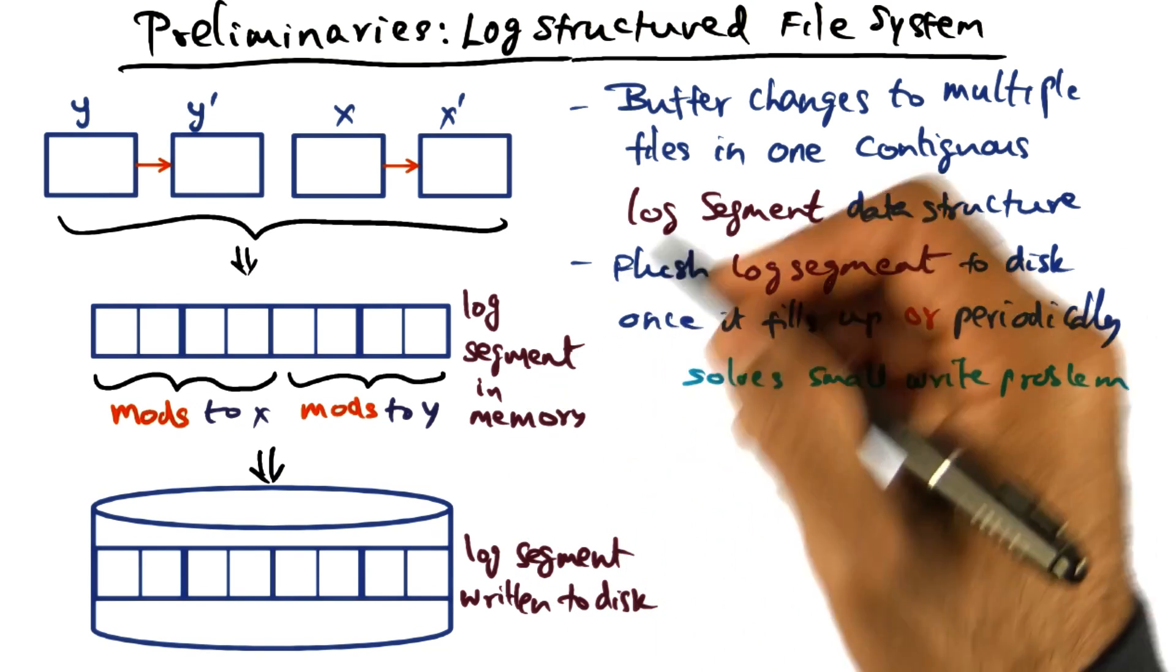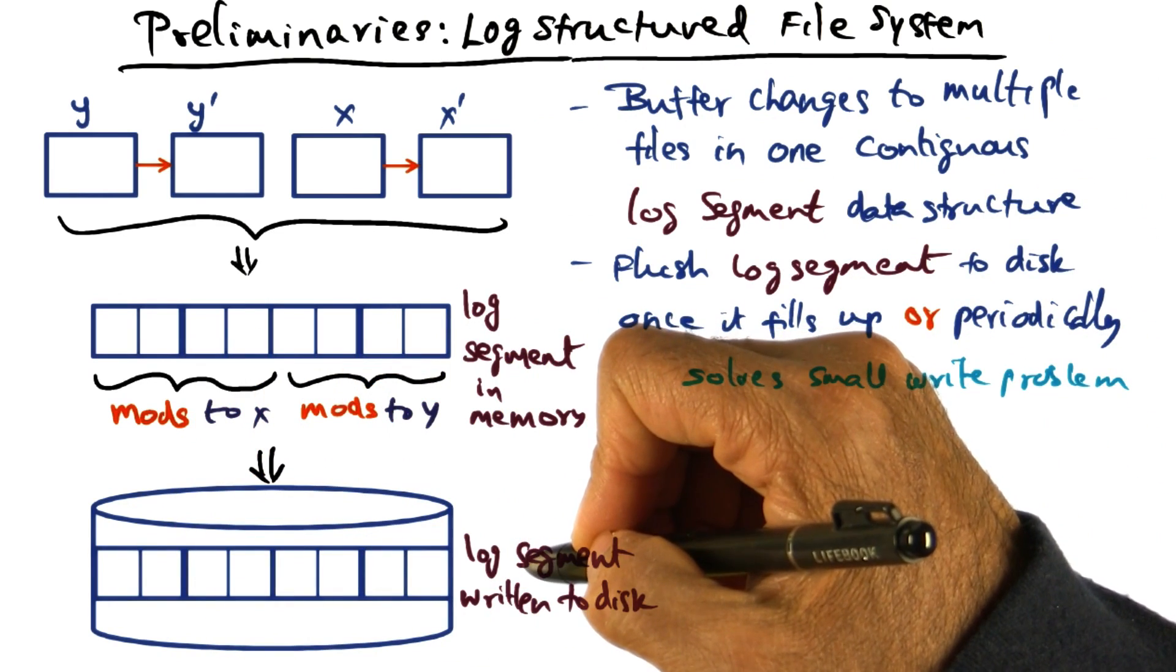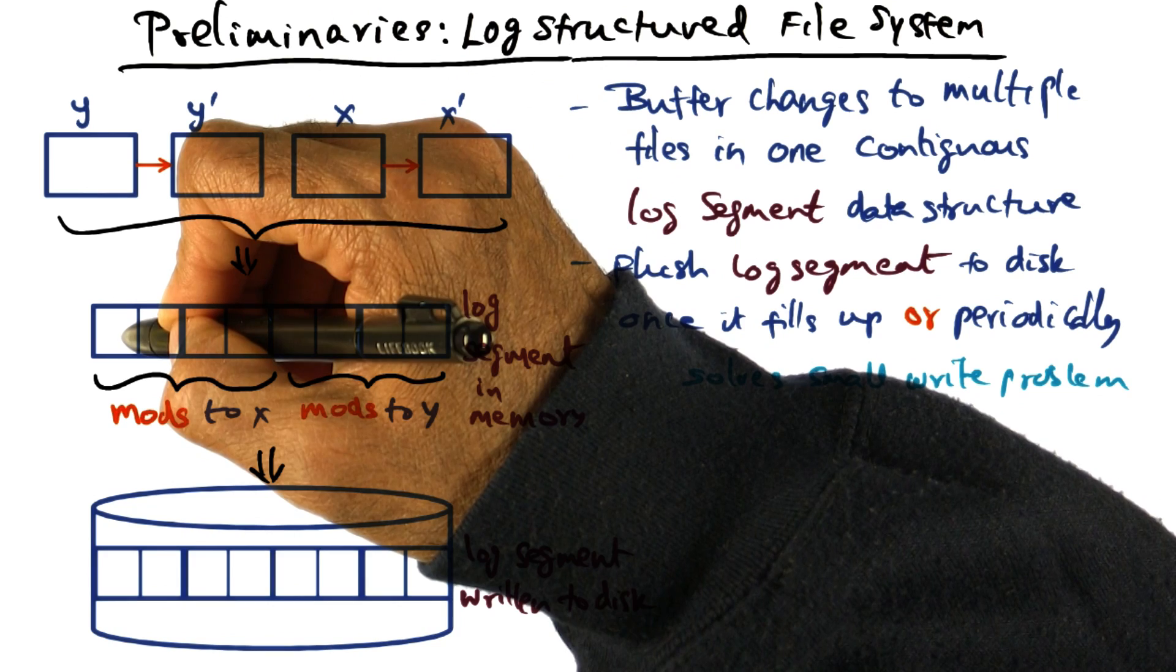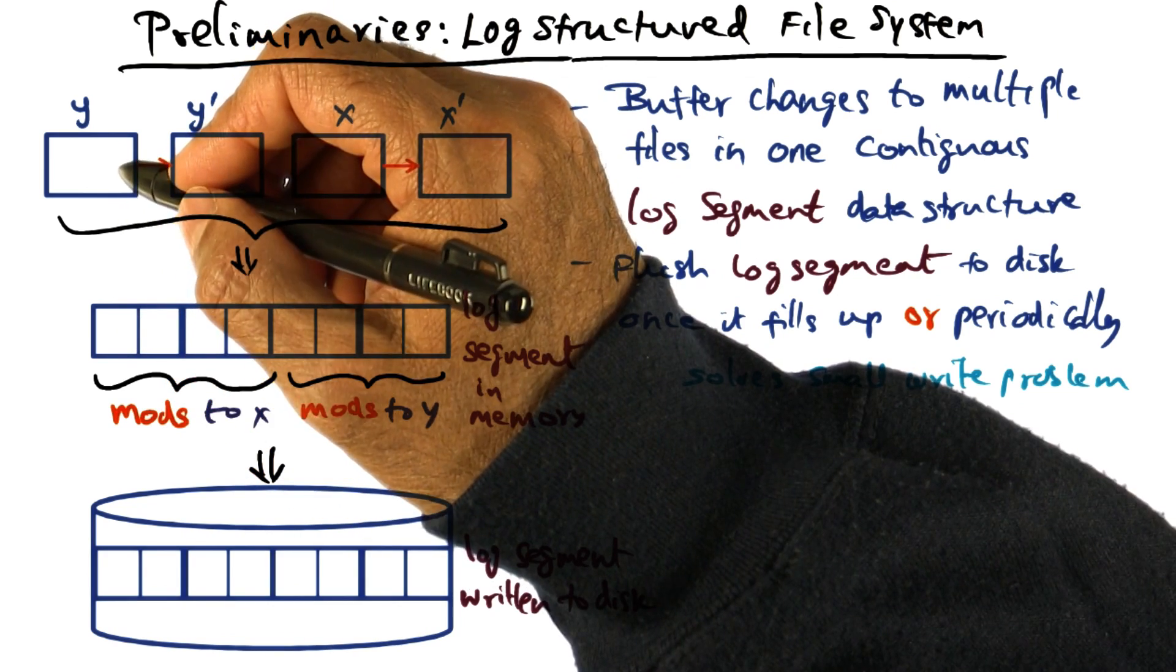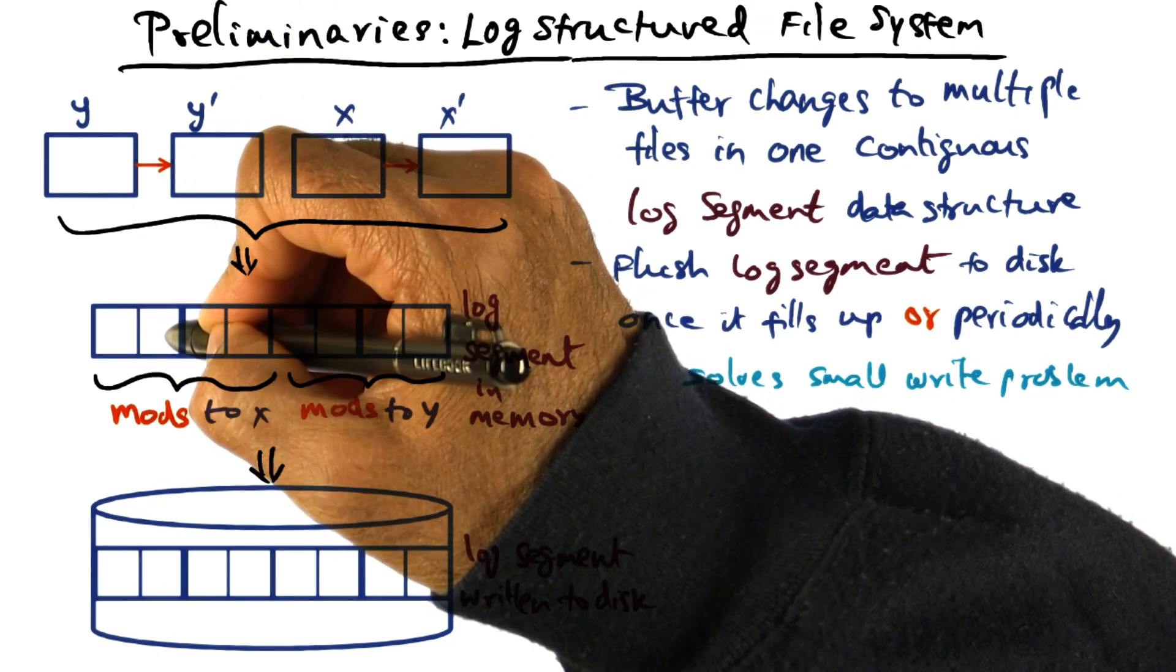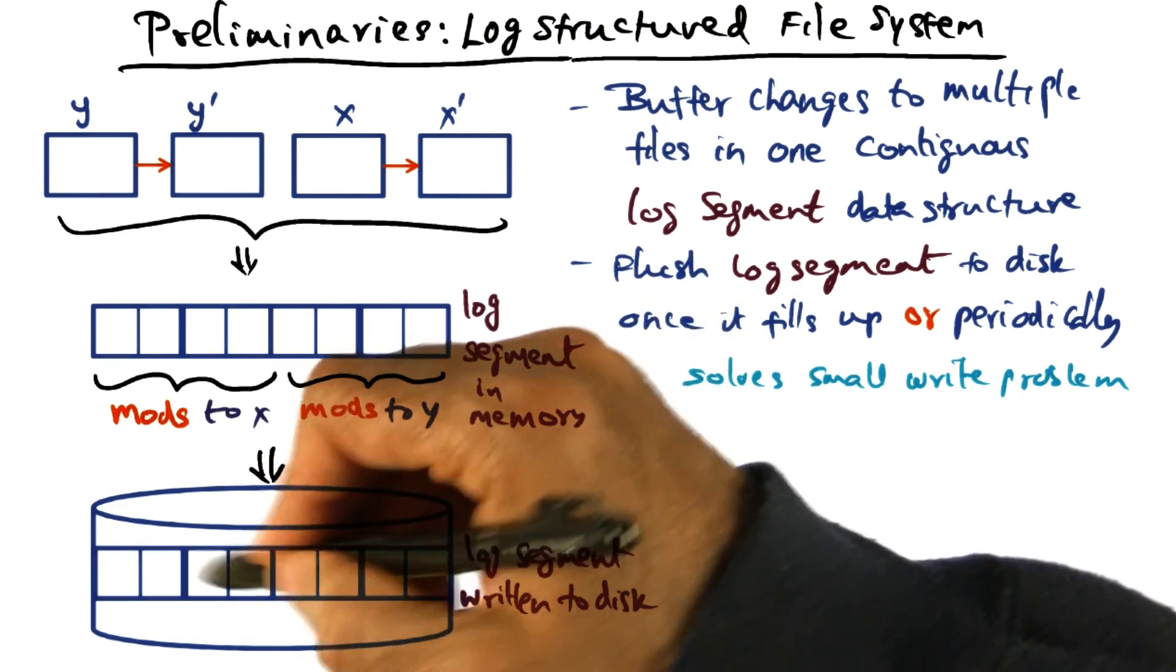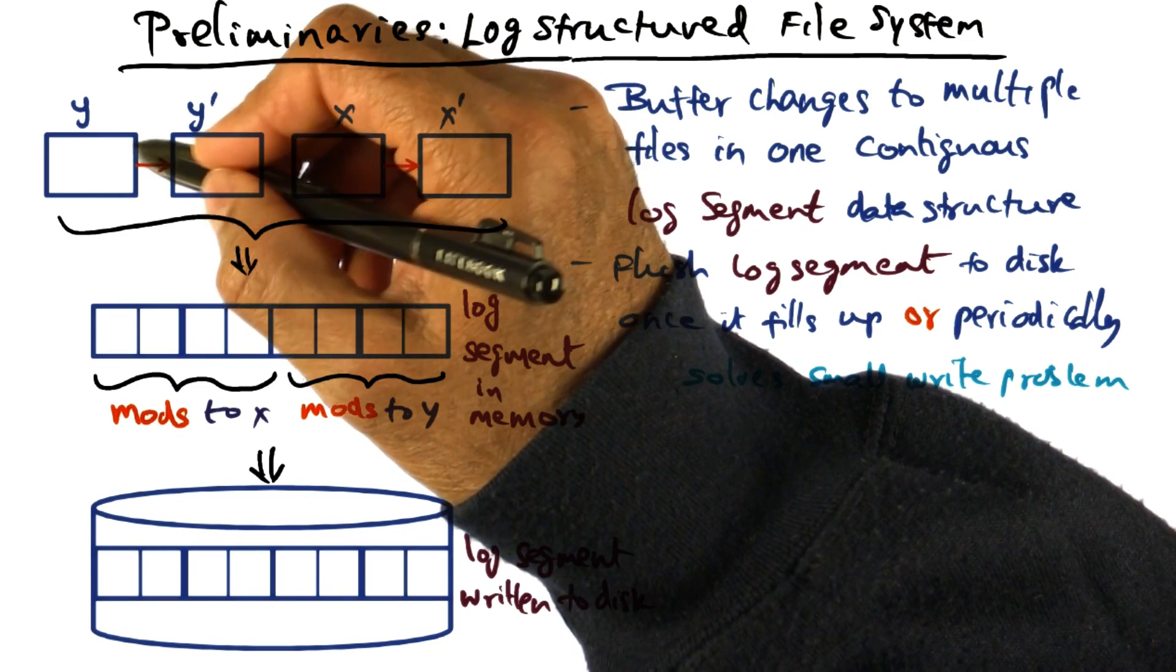And the other thing that you have to worry about when you have a log-structured file system is that these logs represent changes that have been made to the files. So for instance, I may have written a particular block of y, and that may be the change sitting here. Next time, what I'm doing is perhaps I'm writing the same block of the file. In which case, the first write that I did, that is invalid. I have got a new write of that same block. So you see that over time, the logs are going to have lots of holes created by overwriting the same block of a particular file.